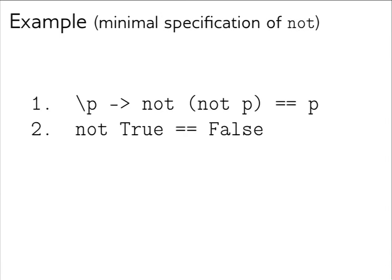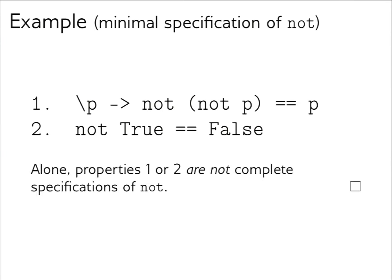A minimal specification of `not` is just properties one and two. This is minimal because if you remove either property the specification becomes less restrictive — each property alone is not a complete specification of `not`. This is indeed a minimal and complete specification of `not`.